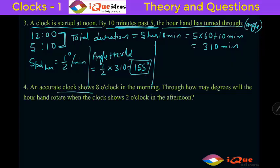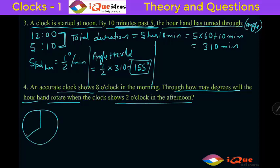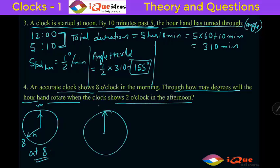An accurate clock shows 8 o'clock in the morning. Through how many degrees will the hour hand rotate when the clock shows 2 o'clock in the afternoon? The hour hand travels from 8 to 2. From 8 o'clock in the morning to 2 o'clock in the afternoon is a duration of 6 hours. For every 1 hour the angle is 30 degrees, so it is simply 30 into 6, that is 180 degrees.